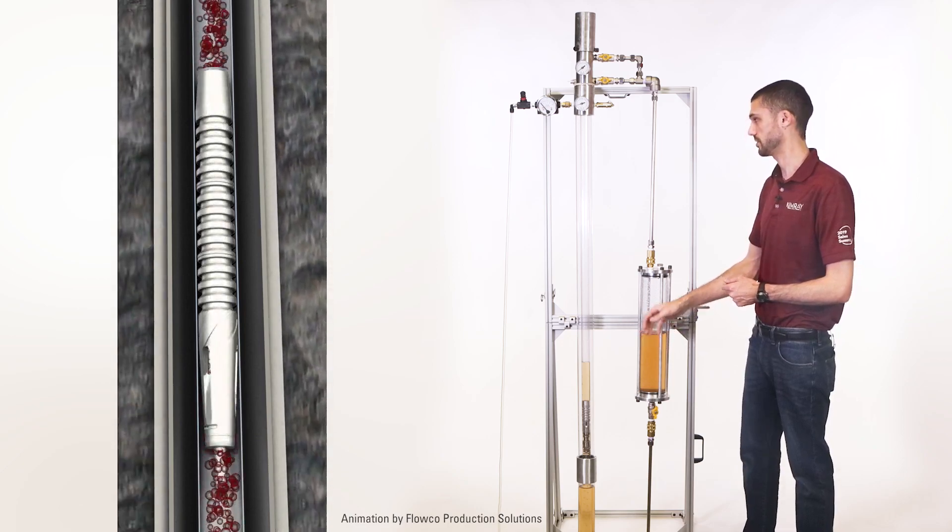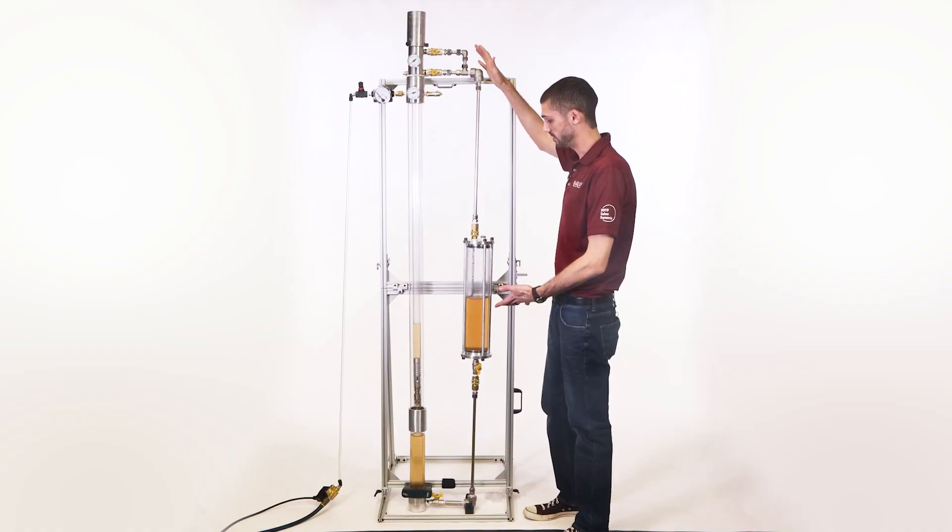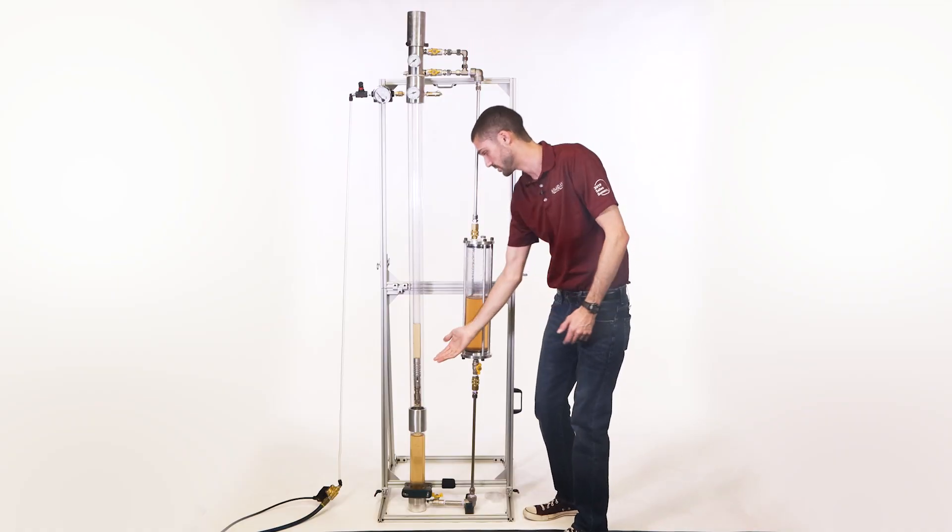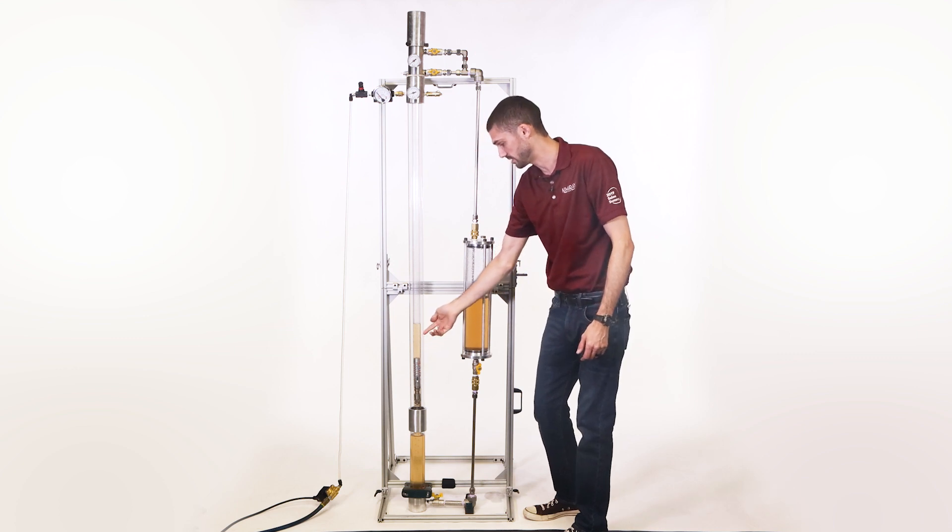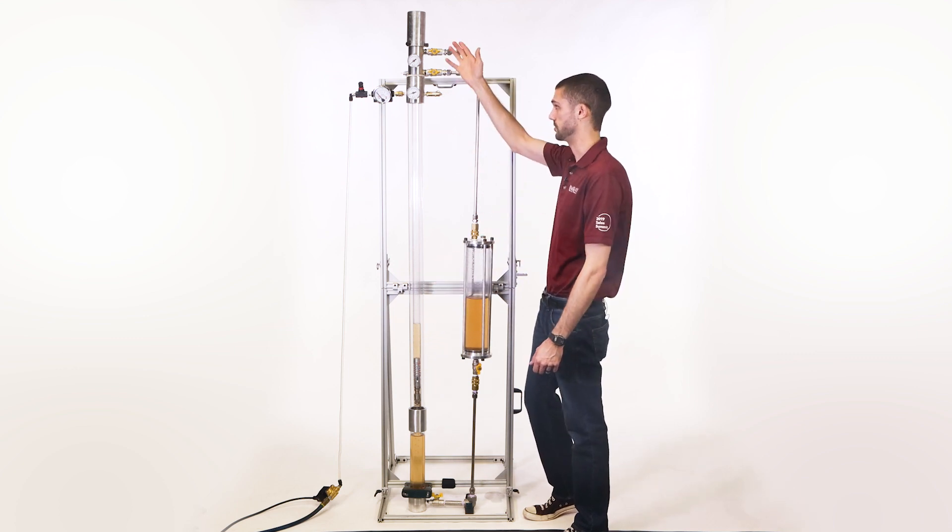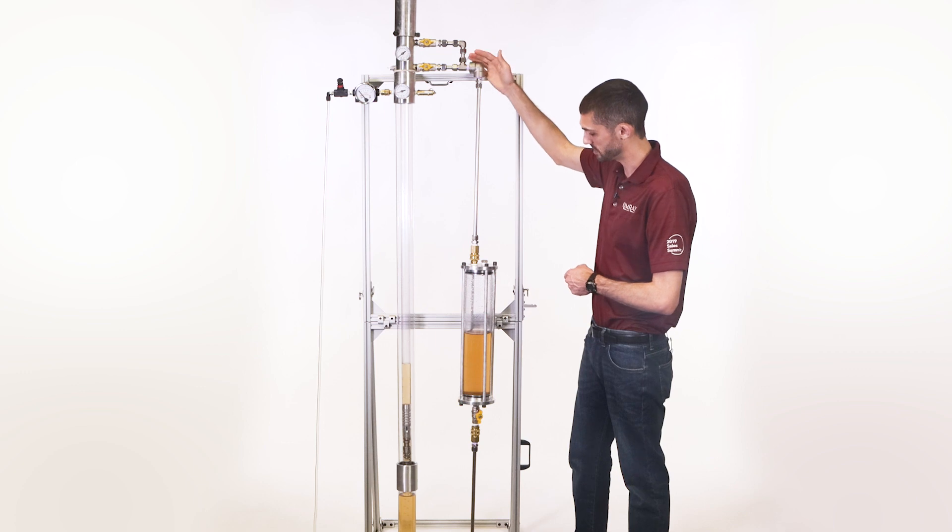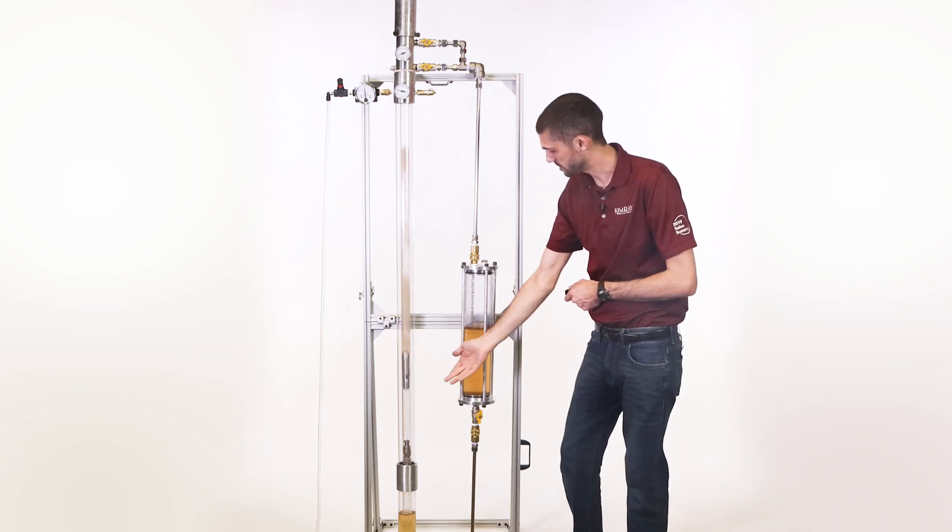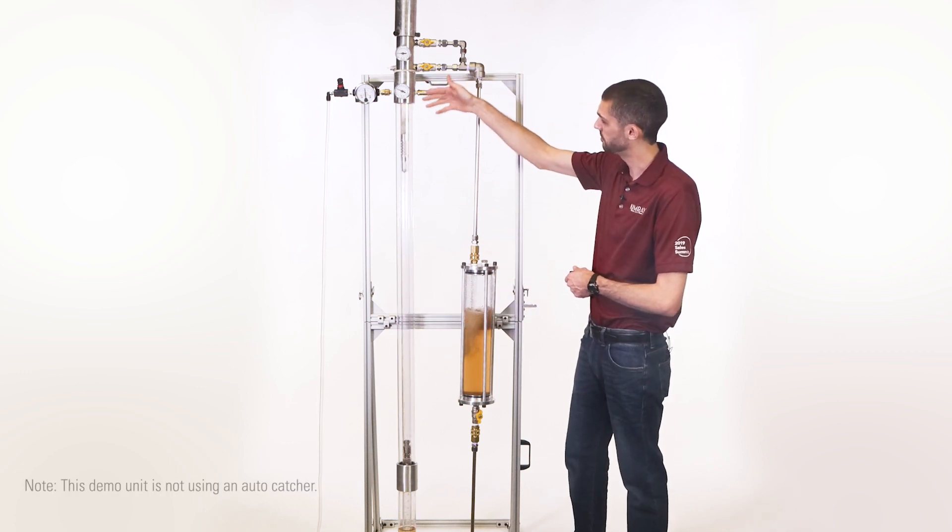As the surface valve opens, that pressure is going to bring the plunger and this column of fluid to the surface. So that valve opens up. That pressure that's built brings the plunger and the column of fluid up.